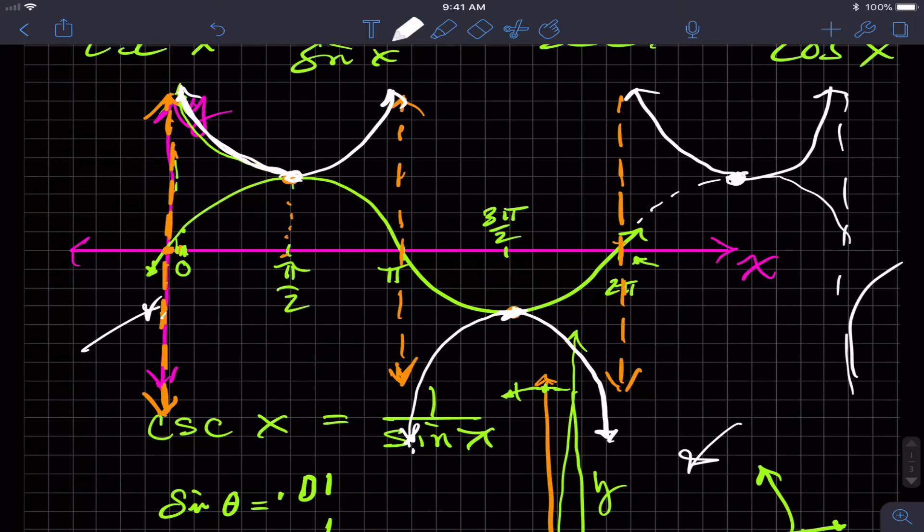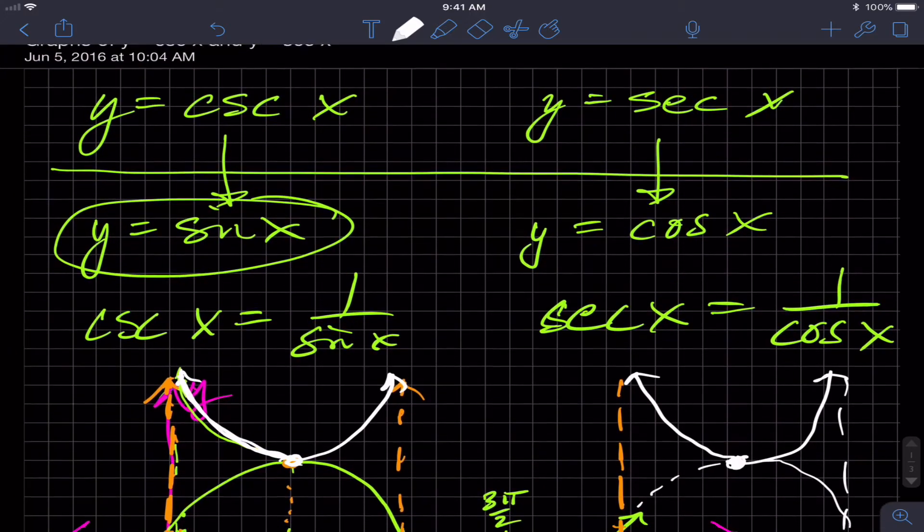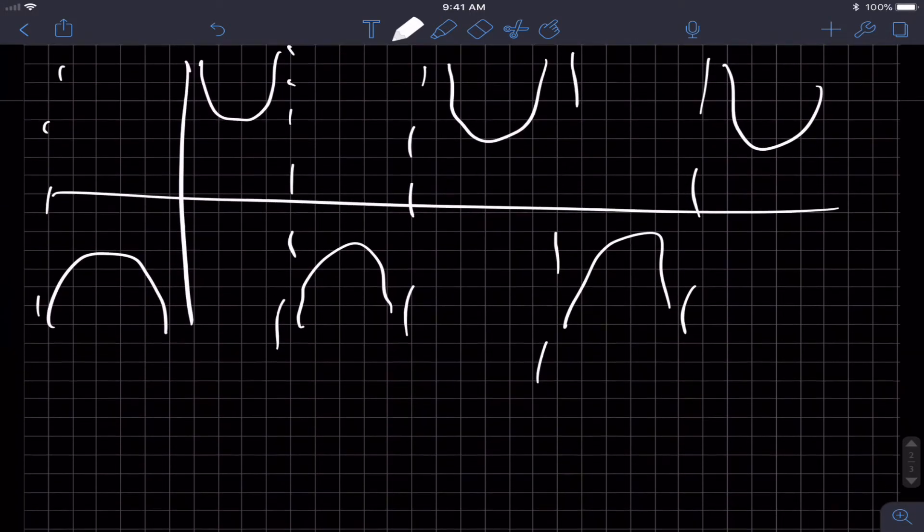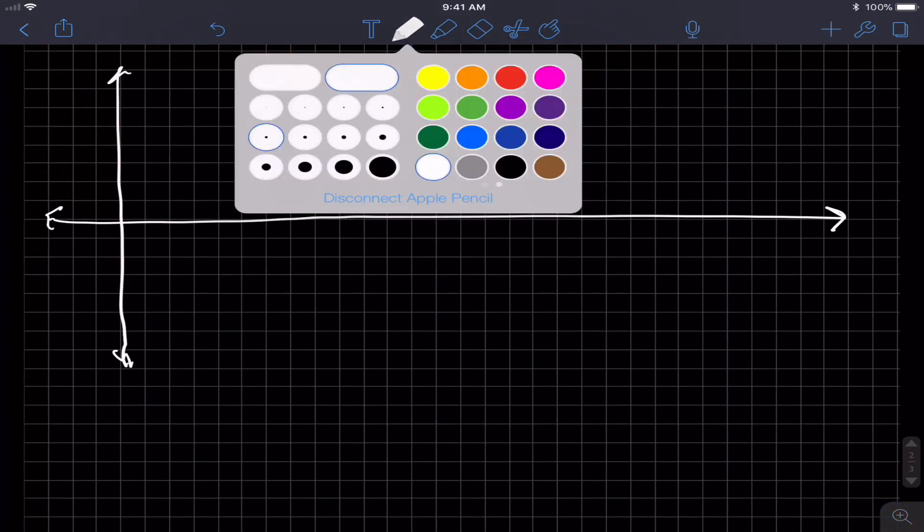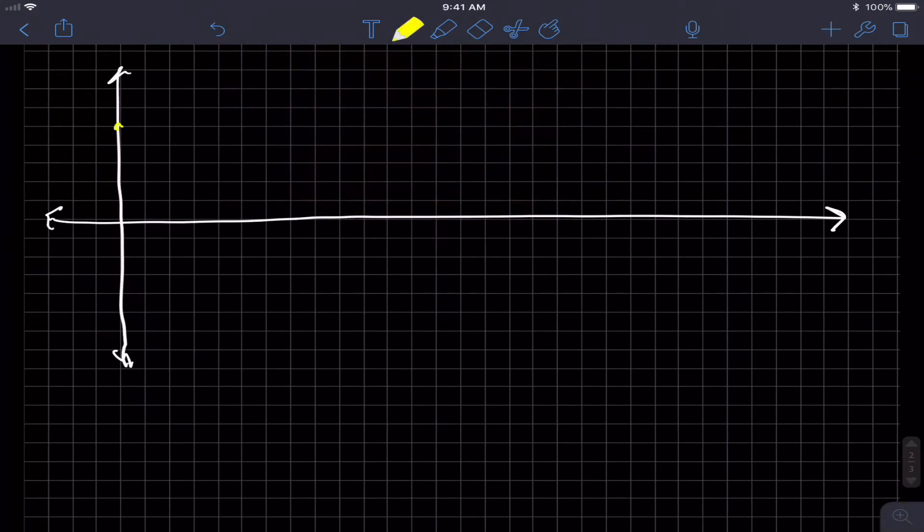And the secant function works the exact same way, except we're talking about secant and cosine. So let's quickly do it since it's pretty much the same situation here, except it's shifted 90 degrees or pi over two, just like cosine's relationship with sine.